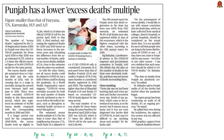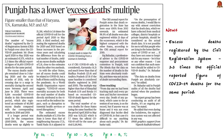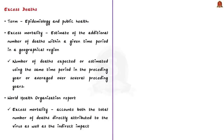A news article reports about excess death cases in Punjab. The number of excess deaths registered by the civil registration system since the start of the pandemic was found to be 3.3 times the official reported COVID-19 deaths for the same period. Excess mortality is a term used in epidemiology and public health. It provides an estimate of the additional number of deaths within a given time period in a geographical region compared to the number of deaths expected over several preceding years.